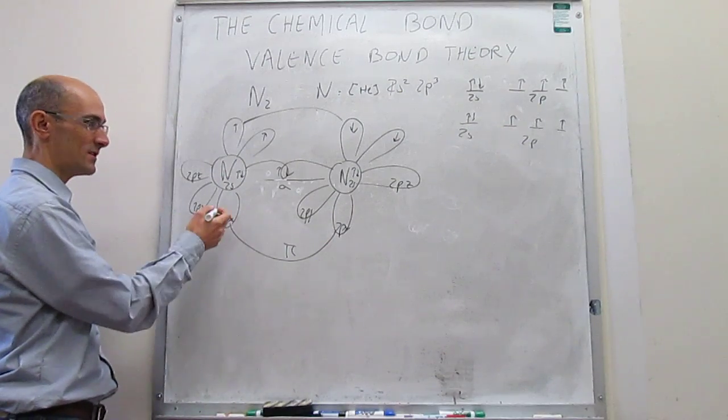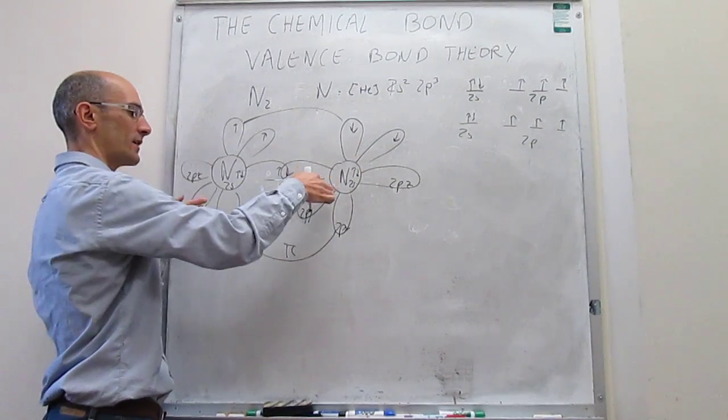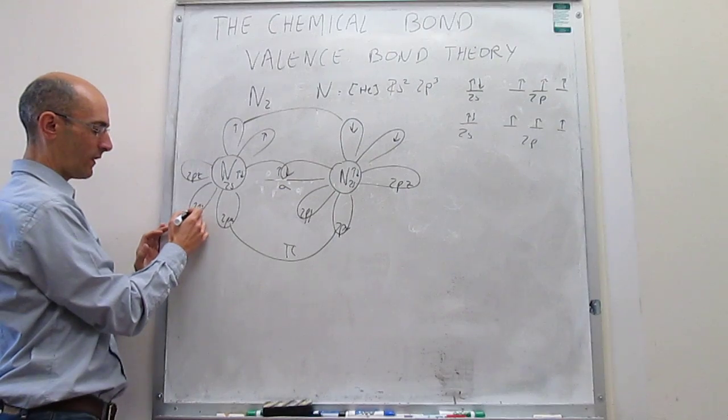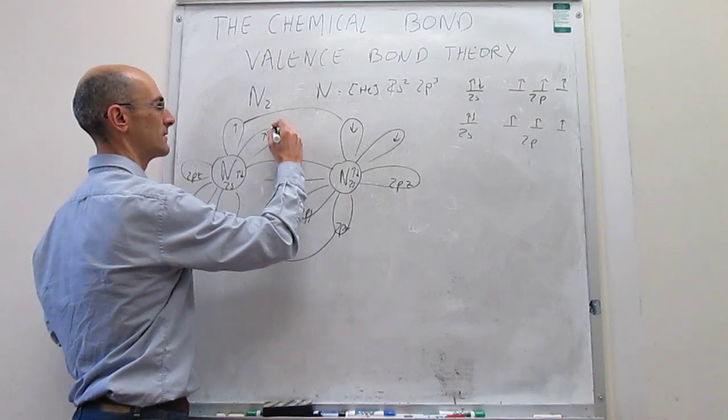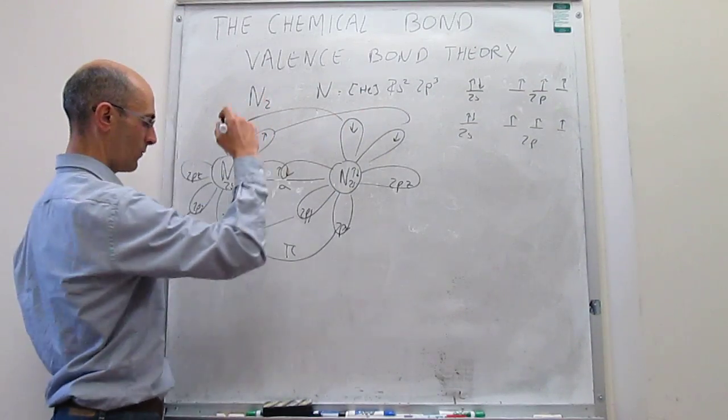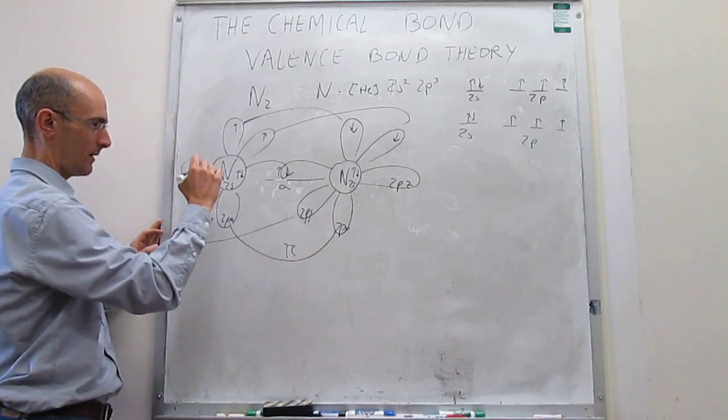There is going to be another overlap, which is hard to draw because these orbitals really are coming in and out of the plane. The way that we usually do this is something like this. And we label that as a pi overlap.